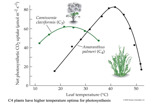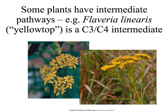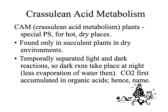An interesting thing about C4 plants is their temperature optima for photosynthesis are much higher. Here are two plants from California: Camisonia, a C3 plant, which has its optimal photosynthesis in cooler temperatures around 24–25 degrees Celsius (mid-70s Fahrenheit), whereas Amaranthus palmeri has its optimum nearer to 100 degrees Fahrenheit. Physiologists have found that some plants are intermediate; for example, our native plant Flaveria linearis is a C3/C4 intermediate.